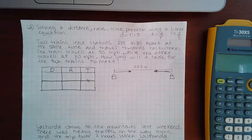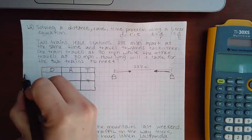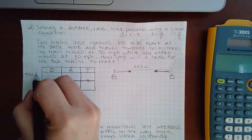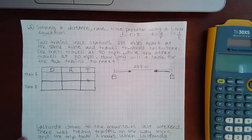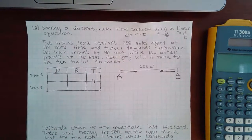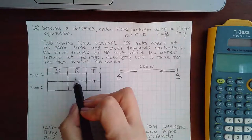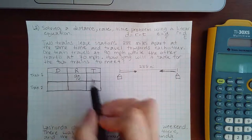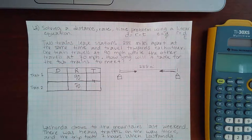Now it says one train travels 90 miles per hour while the other train travels at 70 miles per hour. So we'll call this train one, we'll call this train two because they didn't give me any other identifying information. We're going to say that the rate is 90 miles per hour and the other one is 70 miles per hour since that's exactly the information that they've given me.